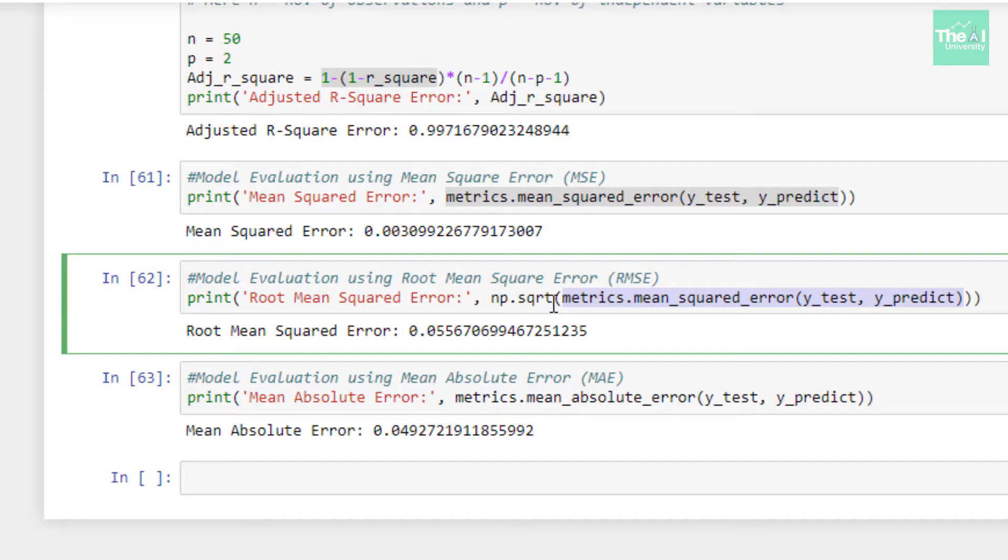And when I ran the cell, we can see that RMSE output came as 0.05567, which is quite low depicting that our model is really good.